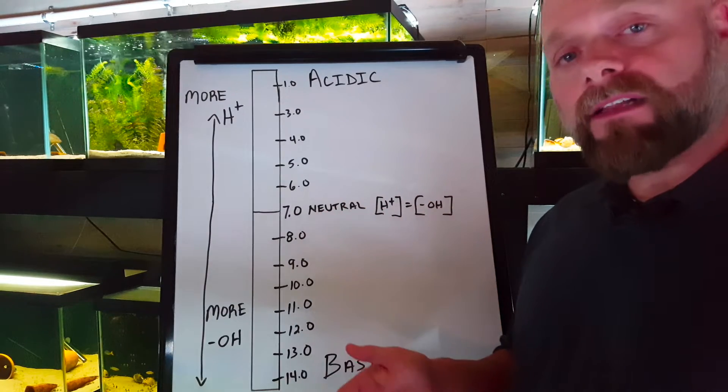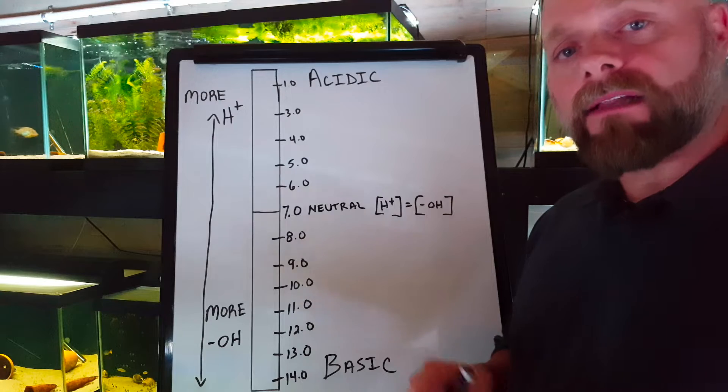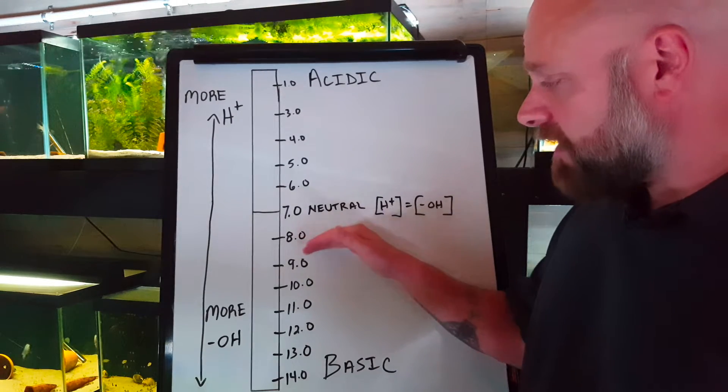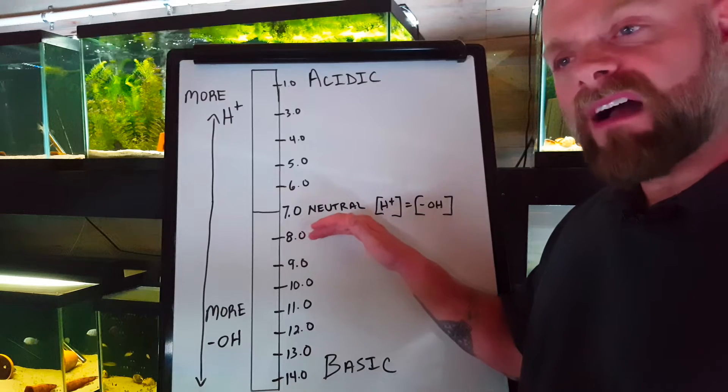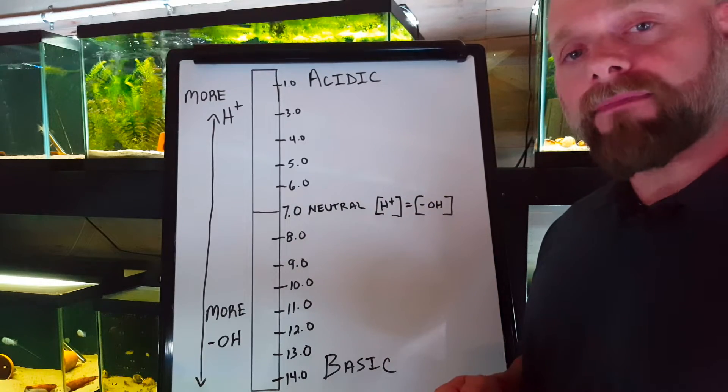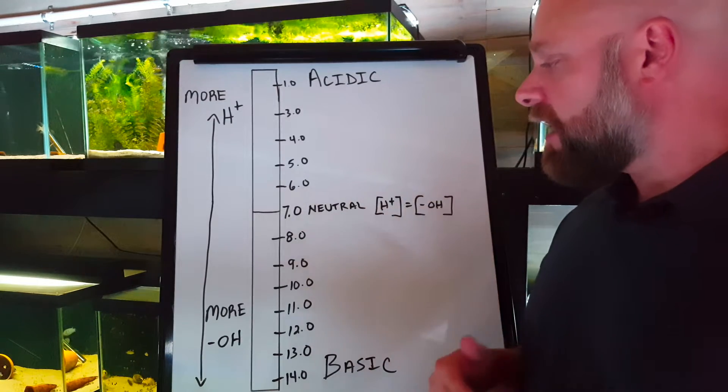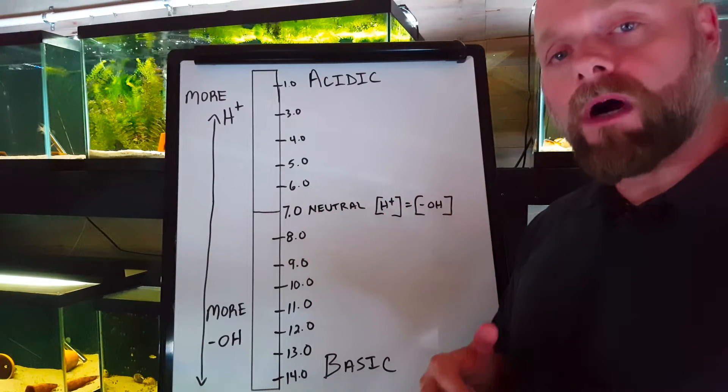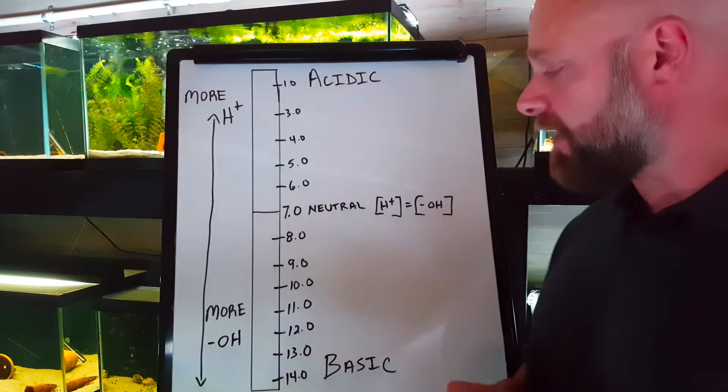If we were keeping African cichlids from one of the three great lakes, like Lake Malawi, Lake Tanganyika, or Lake Victoria, the pH that they enjoy is going to be closer to right around an eight, maybe even an eight and a half. In those waters, they're going to have a higher pH. They're also going to have a lot of dissolved solids or water hardness, something that we'll talk about in a later video.